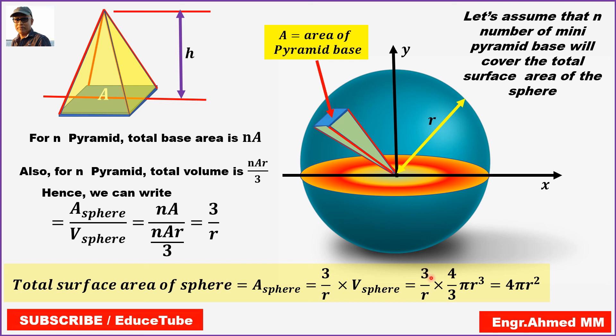So what will be here? 3 by r and we know the volume of the sphere. So here it is 4 by 3 pi r cubed. Now cancelling 3, 3, r, r, we get pi r squared. So our result is 4 pi r squared.